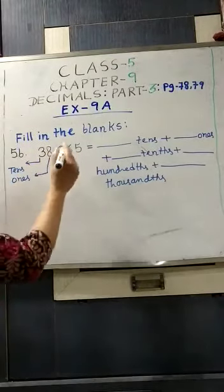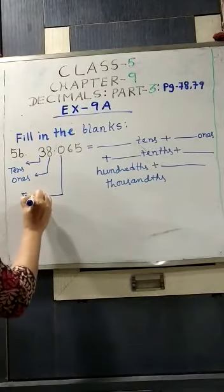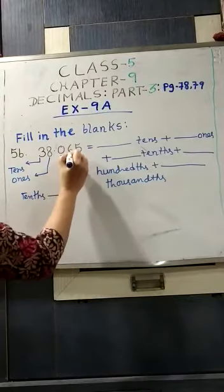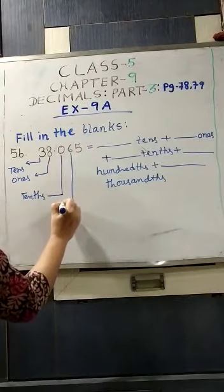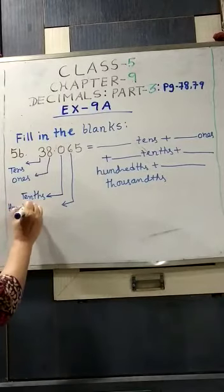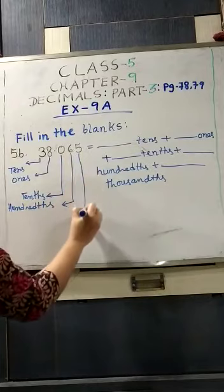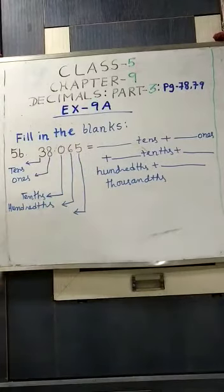After decimal, the first digit, it is tenths. Then, the second one, this is hundredths. And the third one, it is thousandths.